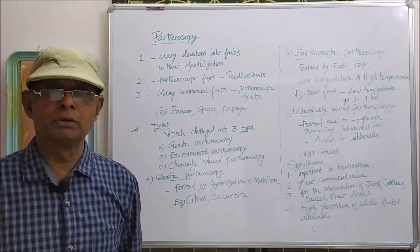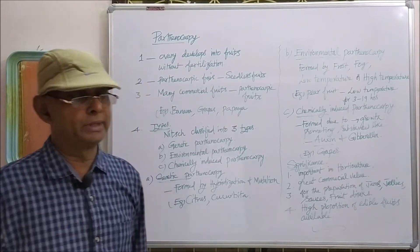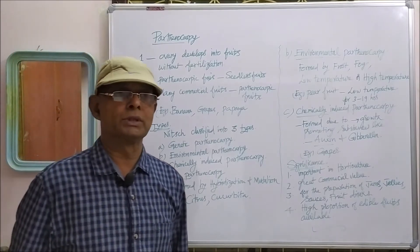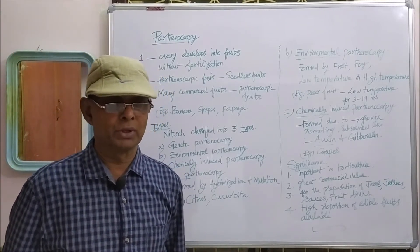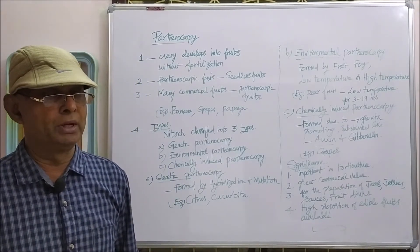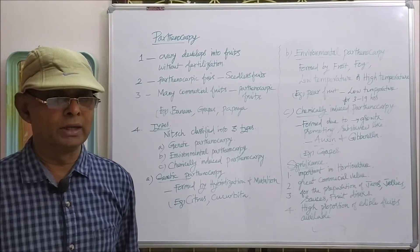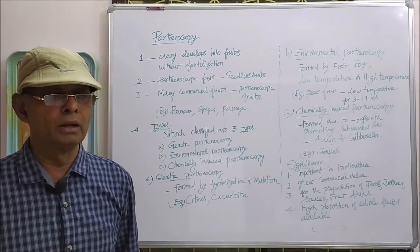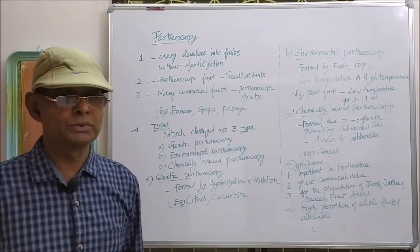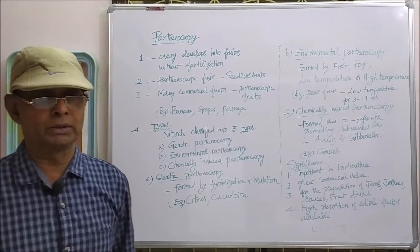When Parthenocarpy fruits are formed due to a hybridization process or mutation — induced mutation process — seedless fruits may be developed. Such fruits are genetically produced Parthenocarpy fruits. This type is called genetic Parthenocarpy.